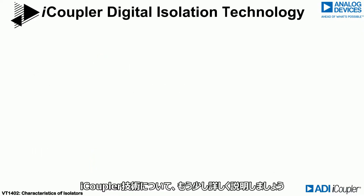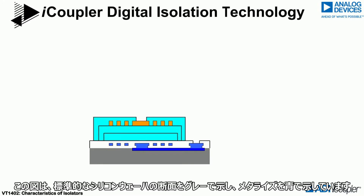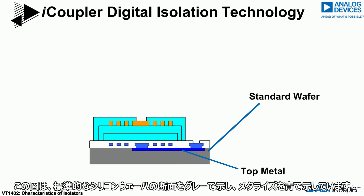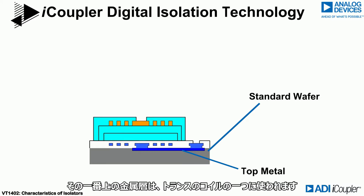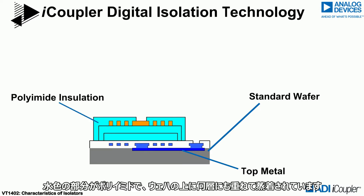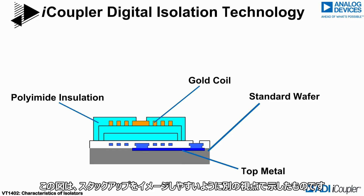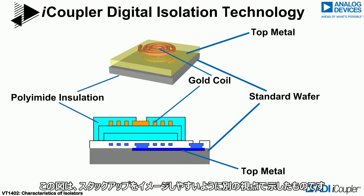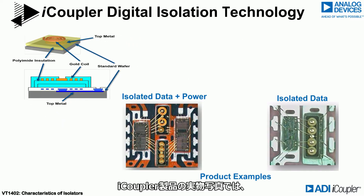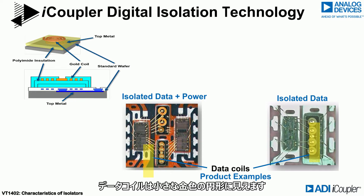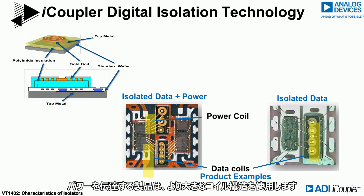Let's talk about i-Coupler technology in more detail. This diagram shows a cross-section of a standard silicon wafer in grey with metallization shown in blue. That top metal layer is used to create one of the transformer coils. The lighter blue material is the polyimide deposited in multiple layers on top of the wafer. Gold coils are patterned on top of the polyimide, and a protective layer is then blanketed over the surface. This diagram shows the stack-up in a different perspective to help visualize it. In these photos of actual i-Coupler products, the data coils can be seen as the small gold-colored circular features, while products that transfer power use a larger coil structure.